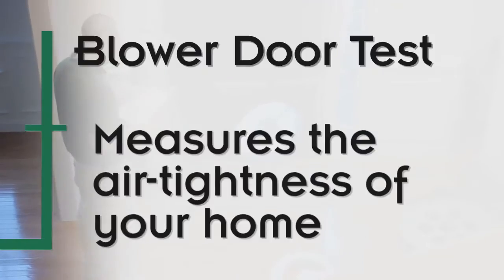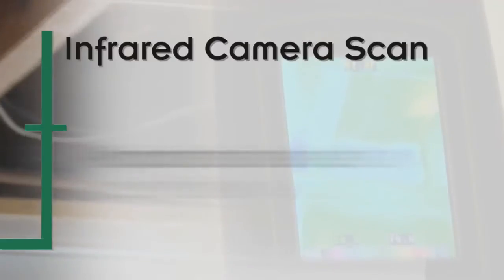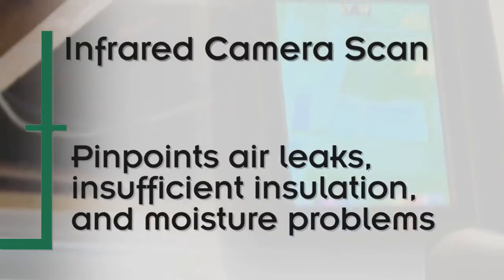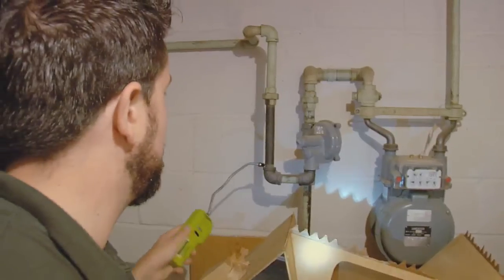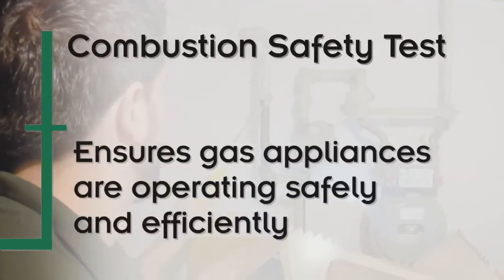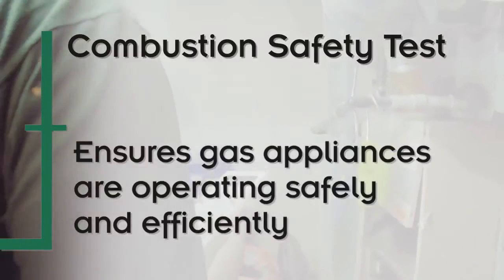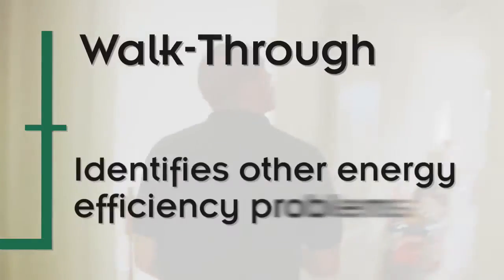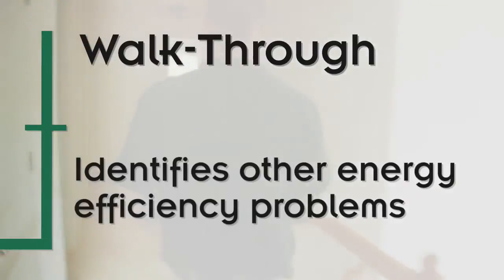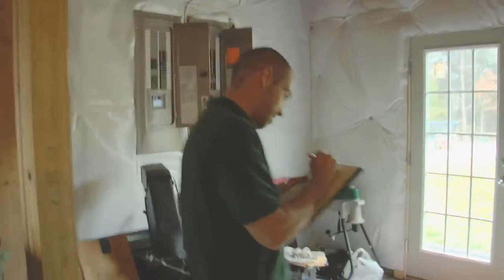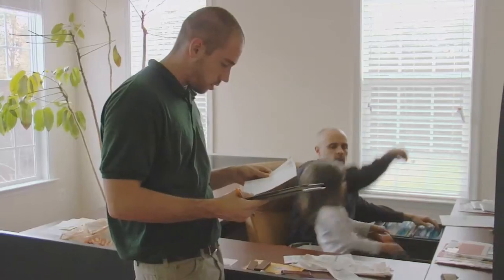Core to any energy audit, you've got a blower door test, an infrared camera scan, combustion safety testing for homes with gas appliances — a gas water heater, a gas furnace — a building walkthrough from the basement to the four corners of the attic, and a survey of all the appliances and the lighting. You talk to the homeowner about how they're using the house. You simulate all this data together into a report that a homeowner can use to prioritize different projects within the house.